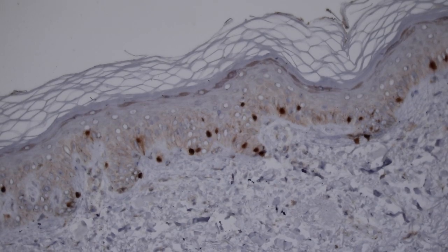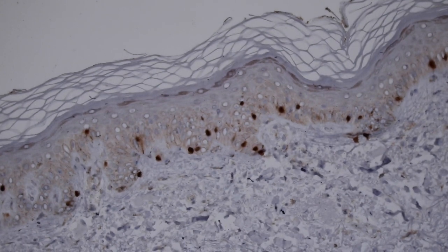And it will also stain other things too, like it stains Schwann cells and nerves. So it's not a perfectly specific marker, but it stains both benign and malignant melanocytes and it will also stain most nerves.